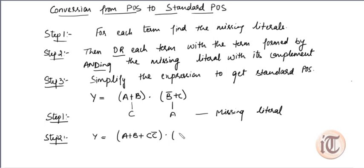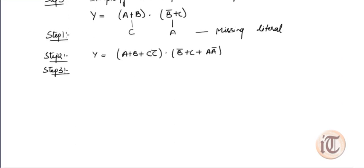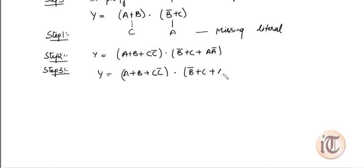This will become A + B + (C · C̄), and the second term will become B̄ + C + (A · Ā) — because here A is missing, so we AND the missing literal with its complement. Step three is to simplify this expression to get the standard form. So Y equals [A + B + (C · C̄)] · [B̄ + C + (A · Ā)].